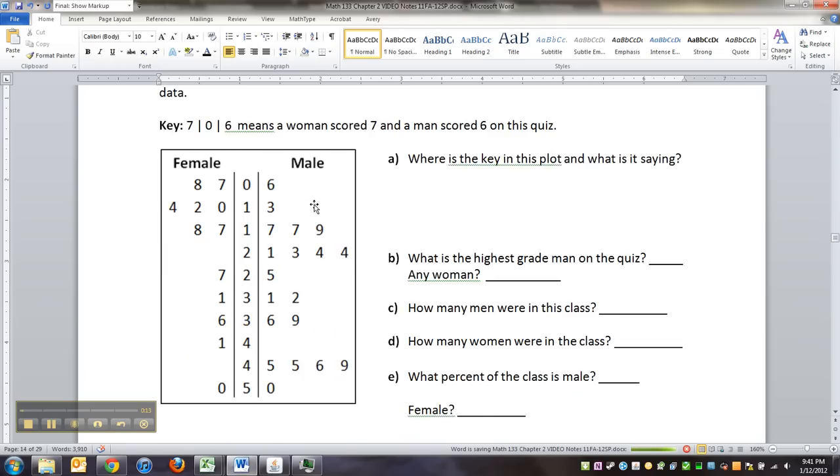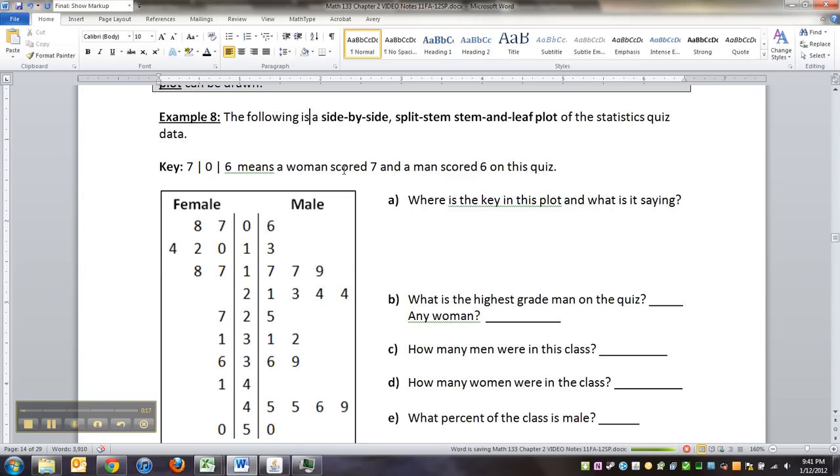A side by side stem and leaf plot is often used when you have two main types of data, or two strata to your data. Remember strata, stratified samples from chapter one, right?